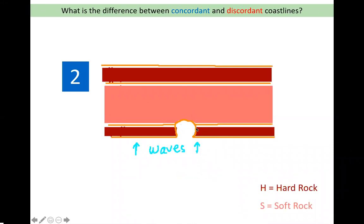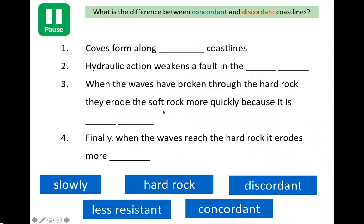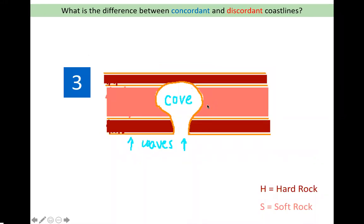Once there is a narrow entrance in the hard rock, the waves hit the soft rock behind it. When they hit the soft rock, it erodes more quickly because the soft rock is less resistant to erosion. Finally, because the waves are eroding the soft rock more quickly, you get a lovely sheltered cove that forms in the soft rock. It looks a bit like a bay — this is why it gets a little confusing — but it is a cove. Remember, you can tell by the narrow entrance in the hard rock. A bay is more open to the sea, whereas a cove is more cut off.